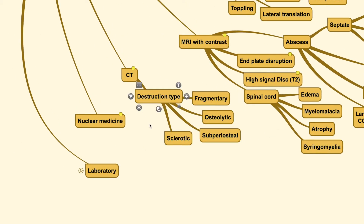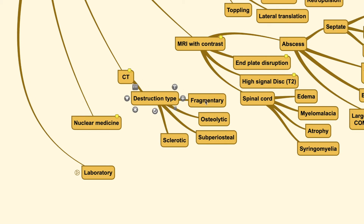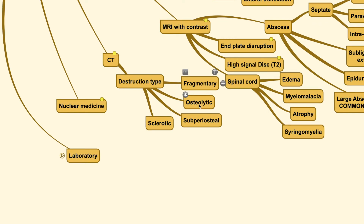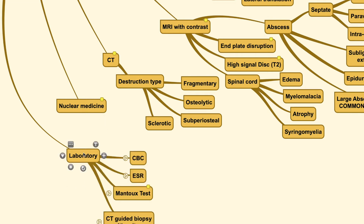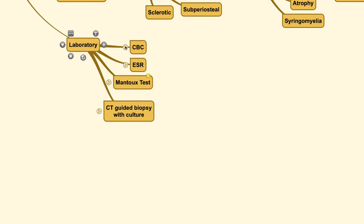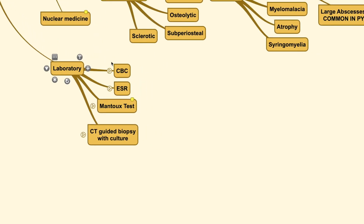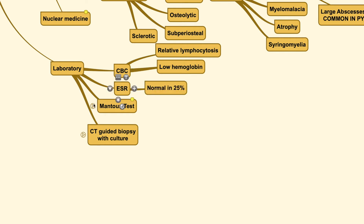For the CT scan, you use it to determine any bony changes and the pattern of destruction, which could be fragmentary, osteolytic, subperiosteal, or even sclerotic. Nuclear medicine has a high sensitivity to detect infection, especially in the early stages. Laboratory findings are interesting because even though spine tuberculosis can be detected through lab means, a lot of the tests are frequently unreliable.